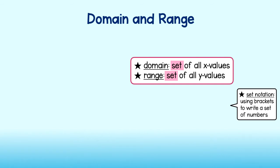Let's take another look at Janice's data on precipitation. The domain or set of x values is 1, 5 tenths, 3, 3 and 5 tenths, and 2. When stating the domain, we will write them in order using brackets or set notation.